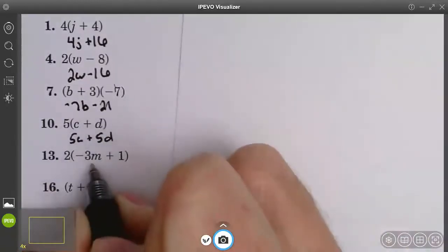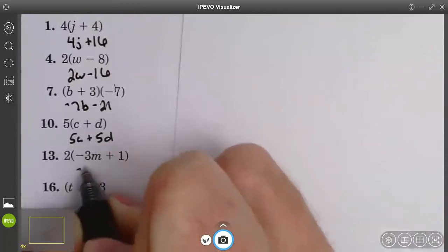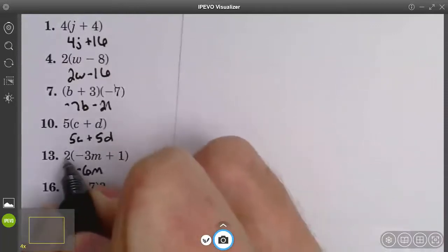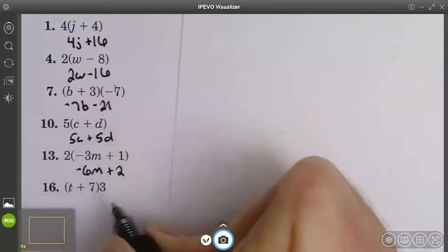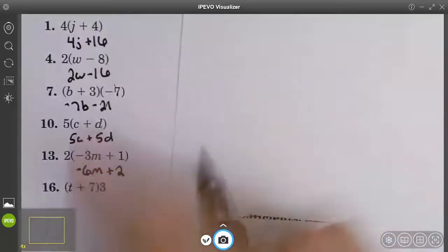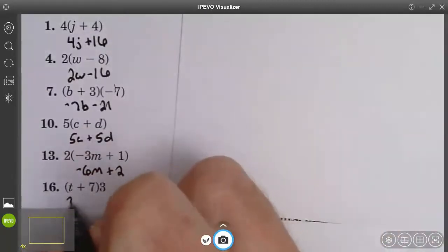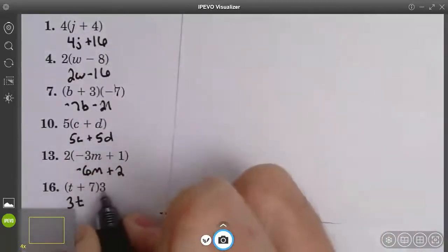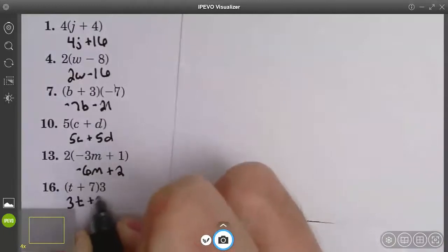Number 13. 2 times negative 3m is negative 6m. 2 times 1 is 2. Number 16. 3 times t is 3t, and 3 times 7 is 21.